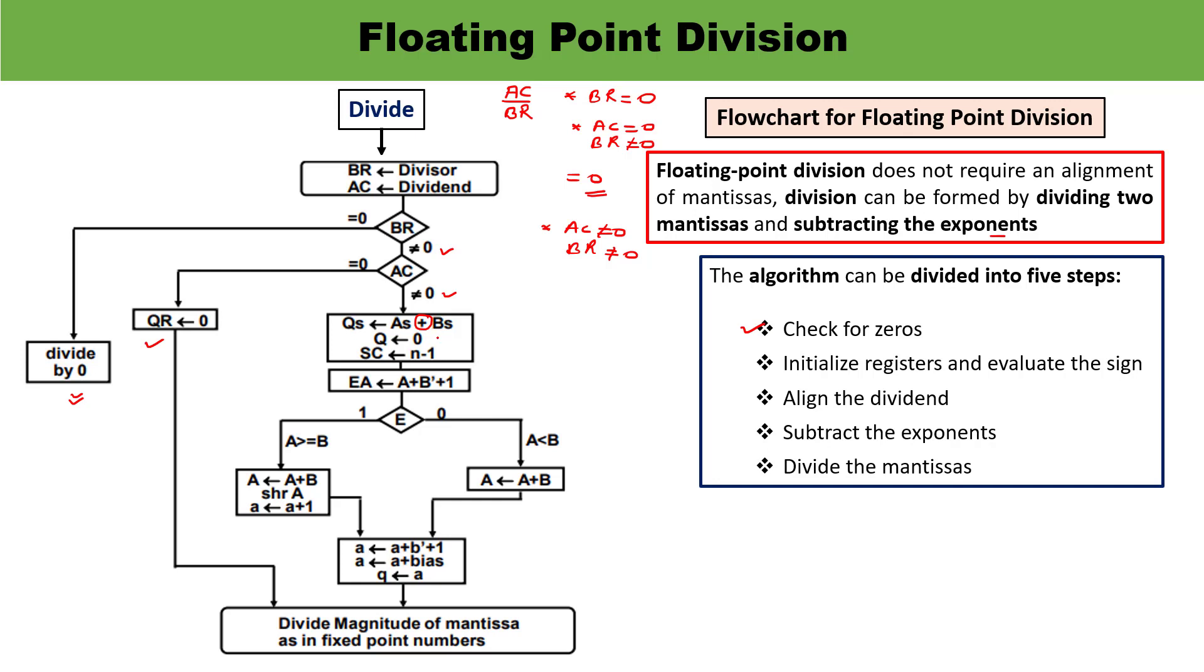Now you must recall that Q is being set as zero because Q register is cleared and the sequence counter is set with a value which is equal to the number of bits in the quotient. Why N minus 1? Because 1 bit will represent the sign and N is the total bit. So N minus 1 bits will represent the magnitude only. Now what is going to happen? This is initializing register, evaluation of sign. Next step is what? Align the dividend.